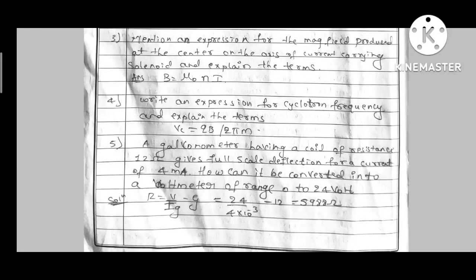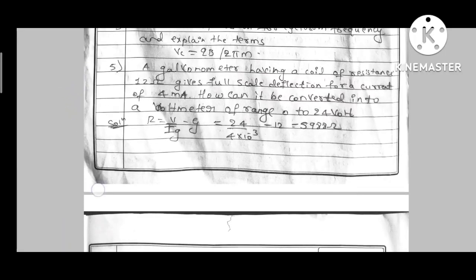Next, write an expression for cyclotron frequency and explain the terms. Q is charge on electron or proton, B is magnetic field, M is mass. Then fifth one, one problem is that galvanometer and voltmeter can convert. That's a simple problem.